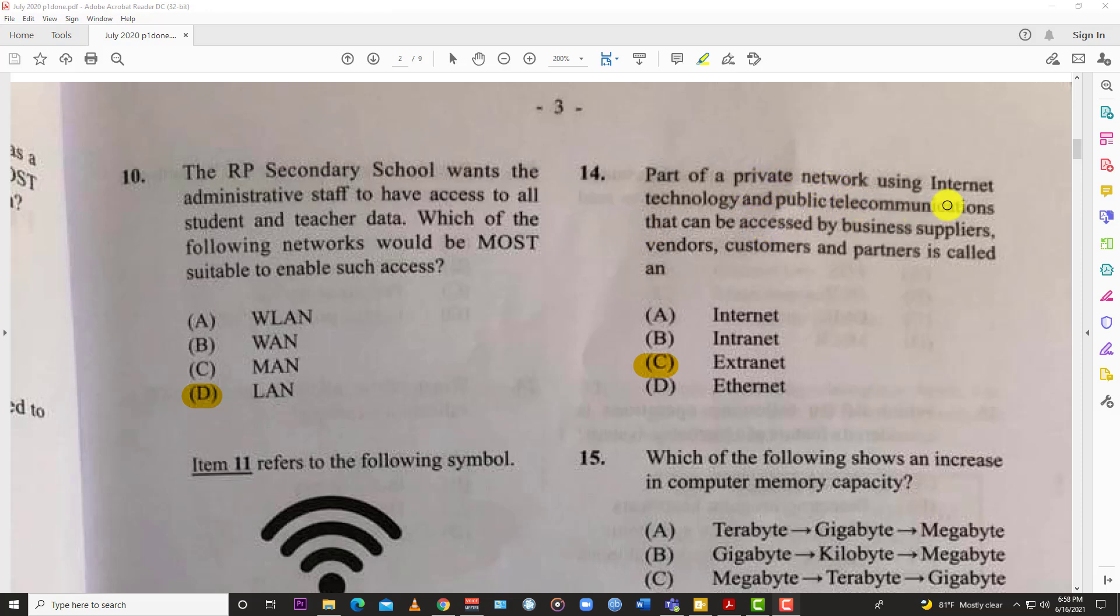Number fourteen: part of a private network using internet technology and public telecommunications that can be accessed by business suppliers, vendors, customers and partners is called an extranet. If it was normally within the complete company alone, it'd be the intranet. Internet is worldwide where everybody has access. Ethernet is just the card and whatnot used to transfer data. But the extranet is both internal and external access.